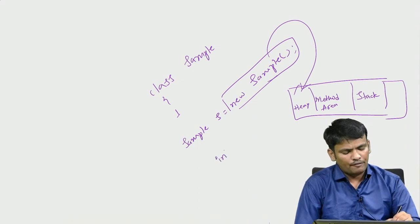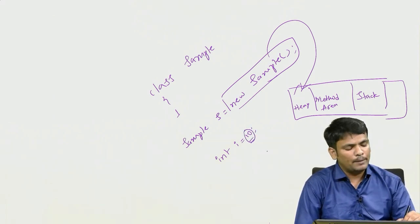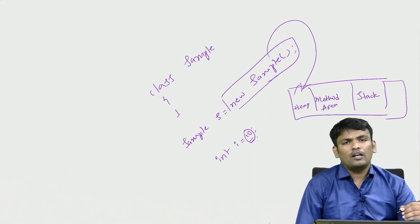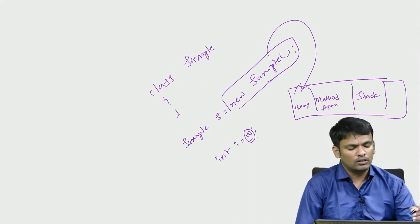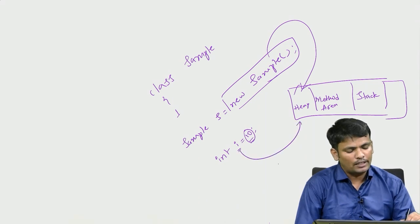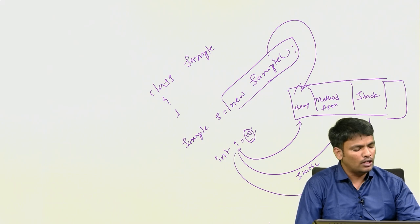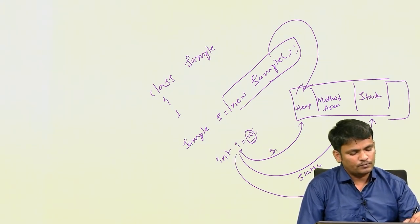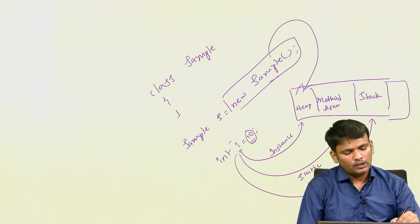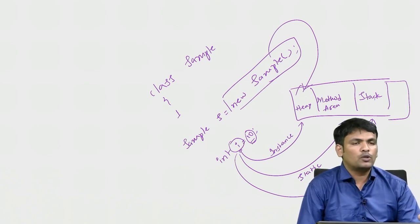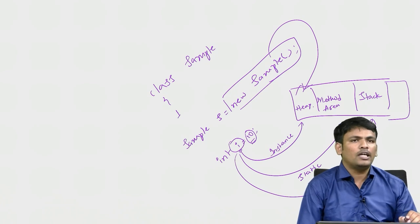Variables are stored in different locations depending on their type: instance variables go to heap area, static variables go to method area, and local variables go to stack area. Objects are always stored only in heap area. Whenever you create an object, it creates space in the heap area and the reference 's' points to that object. The reference name can be any valid identifier.